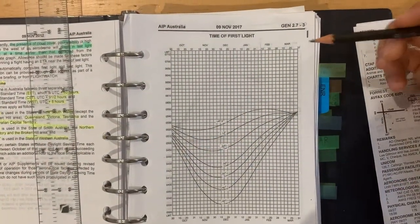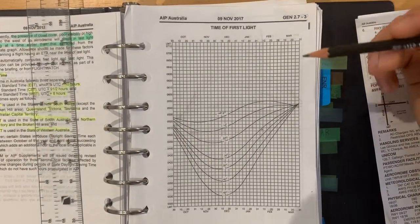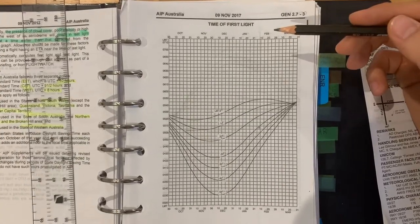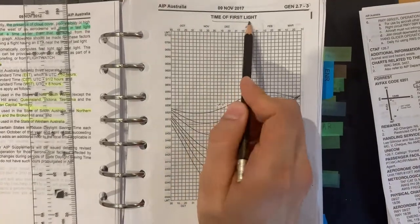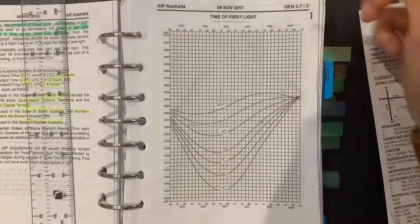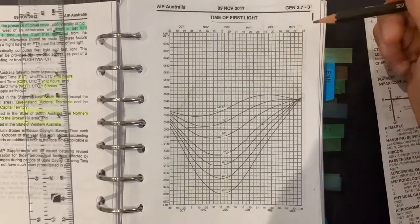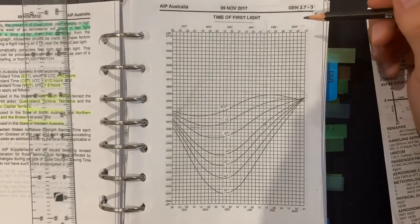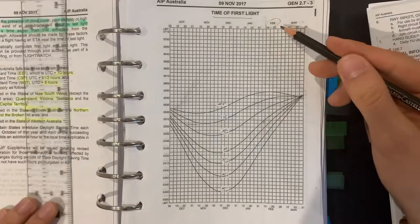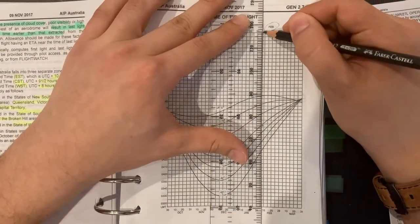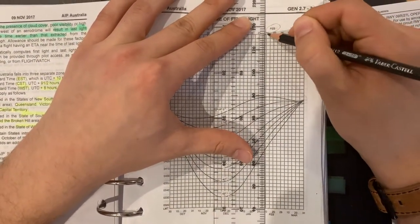Next, with the date we got from the question, which is the 7th of February, we first need to find the correct time of first light graph from gen 2.7 and draw the vertical line from the 7th of February. February 7, right here.